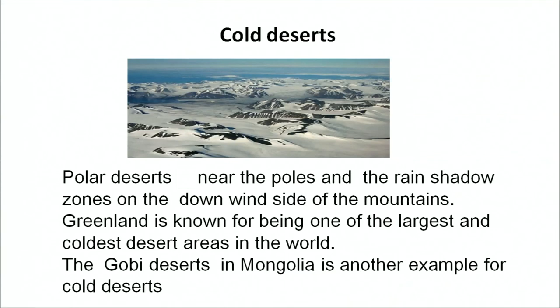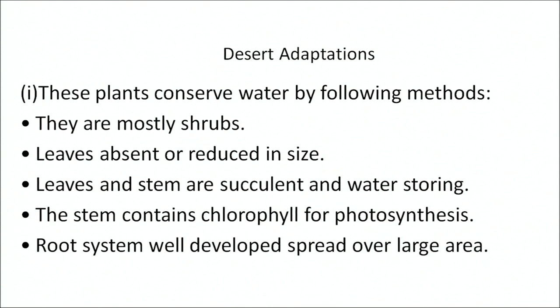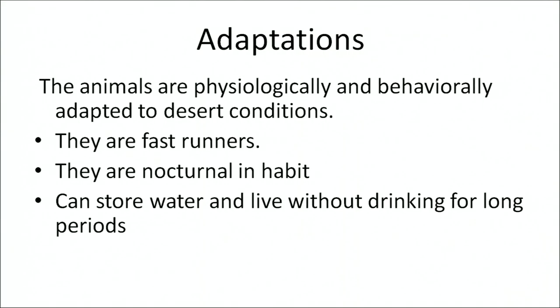The temperature in cold deserts tends to remain steady year-round, typically ranging from 18 to 45 degrees Fahrenheit. Greenland is also known for having the largest national park in the world: the North East Greenland National Park. Desert plants are adapted to water scarcity through the following methods: they are mostly shrubs; leaves are absent or reduced in size; leaf stems are succulent and water-storing; the stem contains chlorophyll for photosynthesis; and the root system is very well developed to cover large areas for absorbing water. Animals are physiologically and behaviourally adapted to desert conditions — they are fast runners, nocturnal, and can store water and live without drinking water for long periods.